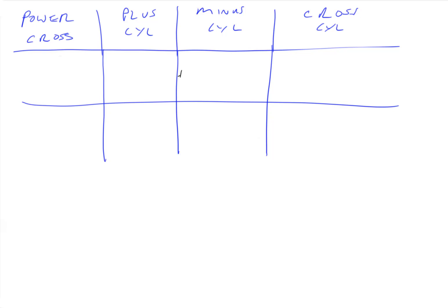So minus cylinder, let's say we have plus 3.00 minus 2.00 axis 90, and then cross cylinder, let's say we have minus 1.00 axis 45 and then plus 1.00 axis 135.